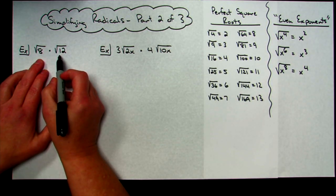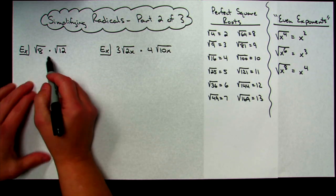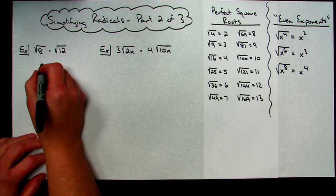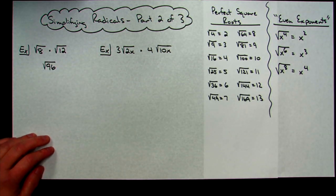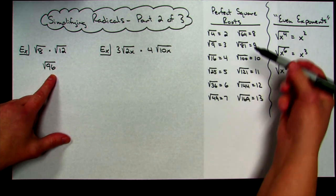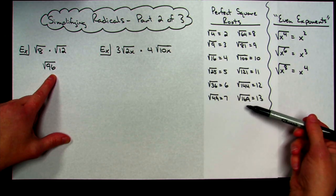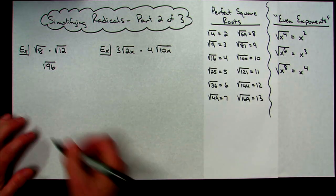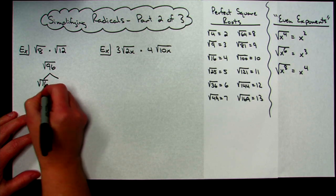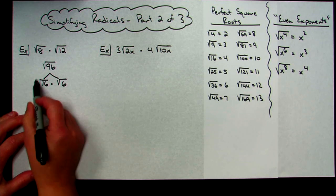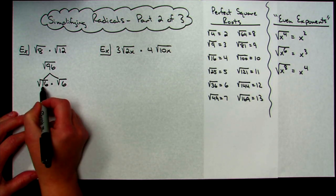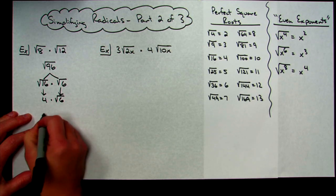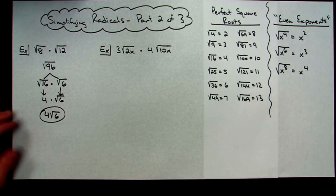First, you can multiply what's underneath radicals. So for square root of 8 times square root of 12, I multiply 8 times 12 to get 96, giving square root of 96. Now I simplify: I find the biggest perfect square root going into 96 — that's 16, since 16 times 6 is 96. So square root of 16 times square root of 6: square root of 16 is 4, radical 6 is simplified. Answer: 4 square root of 6.